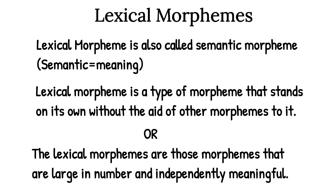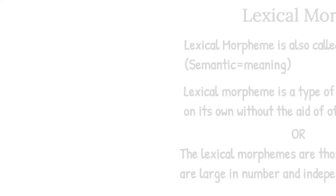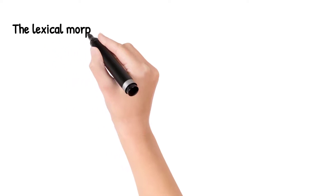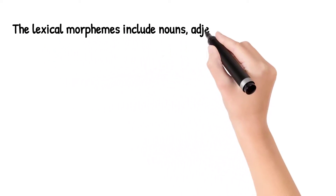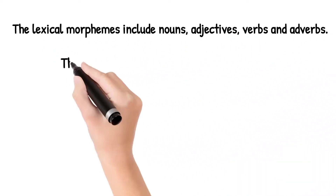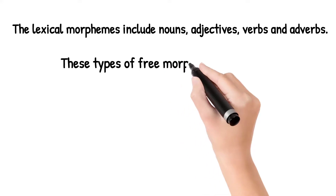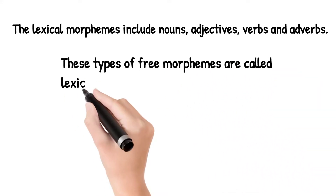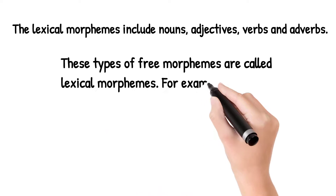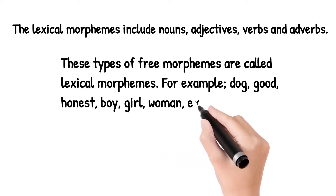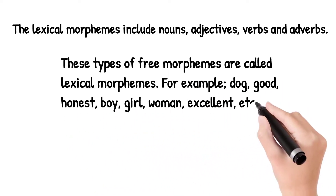Lexical morphemes include nouns, adjectives, verbs, and adverbs. These types of free morphemes are called lexical morphemes. For example: dog, good, honest, boy, girl, woman, excellent, etc.